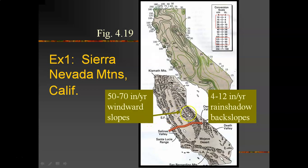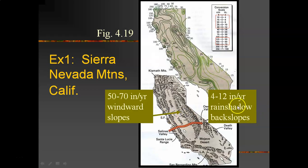We get the westerly winds with the onshore flow from near the Pacific, and you wind up with pretty wet windward slopes — on average getting about 50 to 70 inches of precipitation per year. By comparison, we get about 70 inches in South Louisiana. On the back slopes, significantly less: anywhere from about 4 to 12 inches of precipitation.